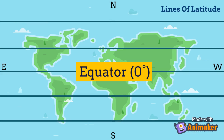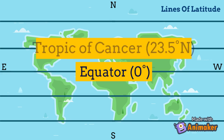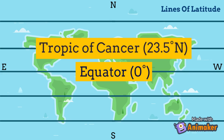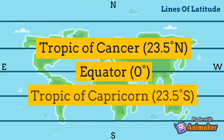The equator measures zero degrees. Next are the two lines of tropics that take over the north and south of the equator. These lines are called the Tropic of Cancer and Tropic of Capricorn respectively. The Tropic of Cancer measures 23.5 degrees north, whereas the Tropic of Capricorn measures 22.5 degrees south.